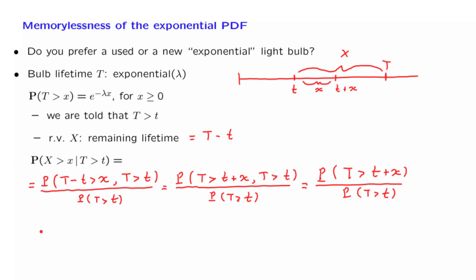Now we can use the formula for the probability that capital T is larger than something. We apply this formula, except that instead of little x, we have t plus x. And so here we have e to the minus lambda times (t plus x) divided by the probability that capital T is bigger than t. So we use this formula but with little t in the place of little x, and we obtain e to the minus lambda t. We have a cancellation, and we're left with e to the minus lambda x, which is the final answer.